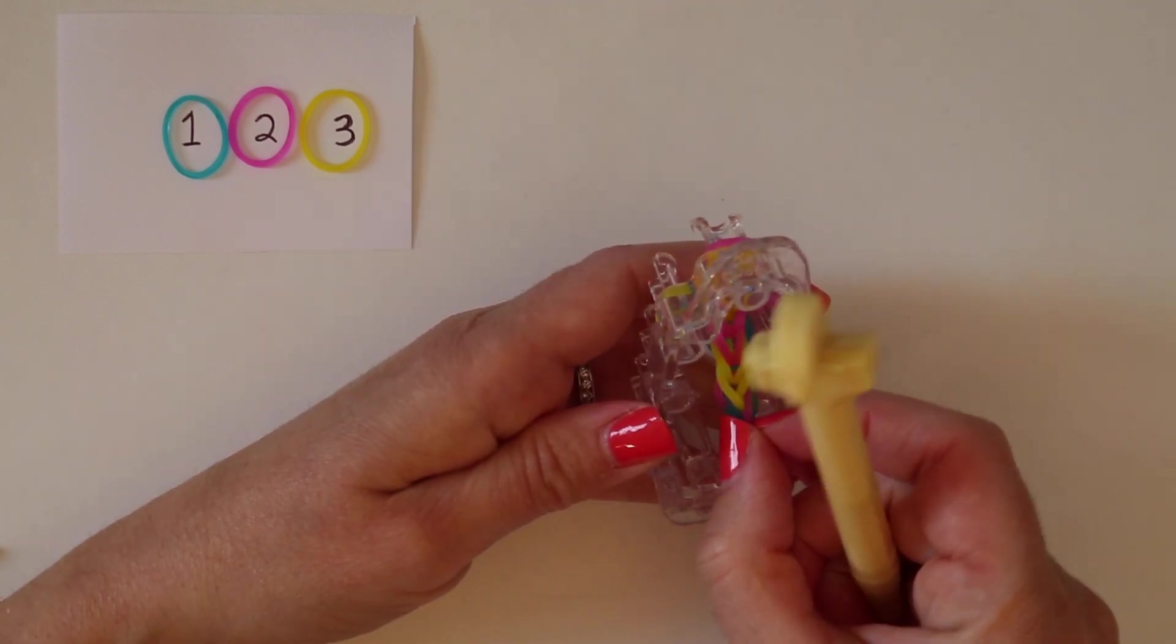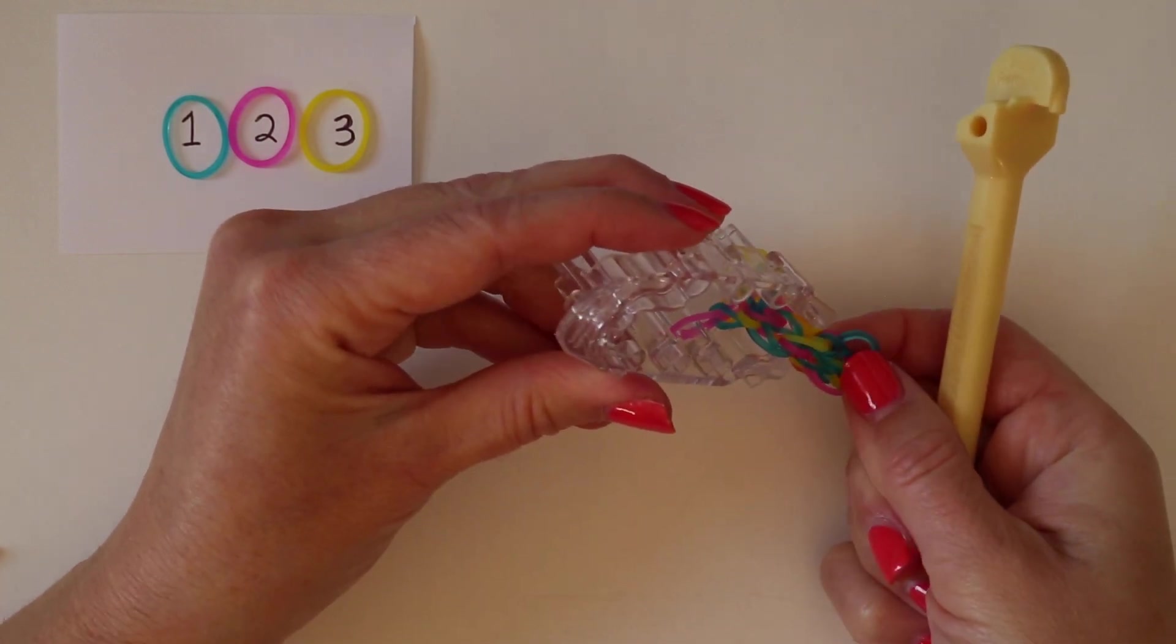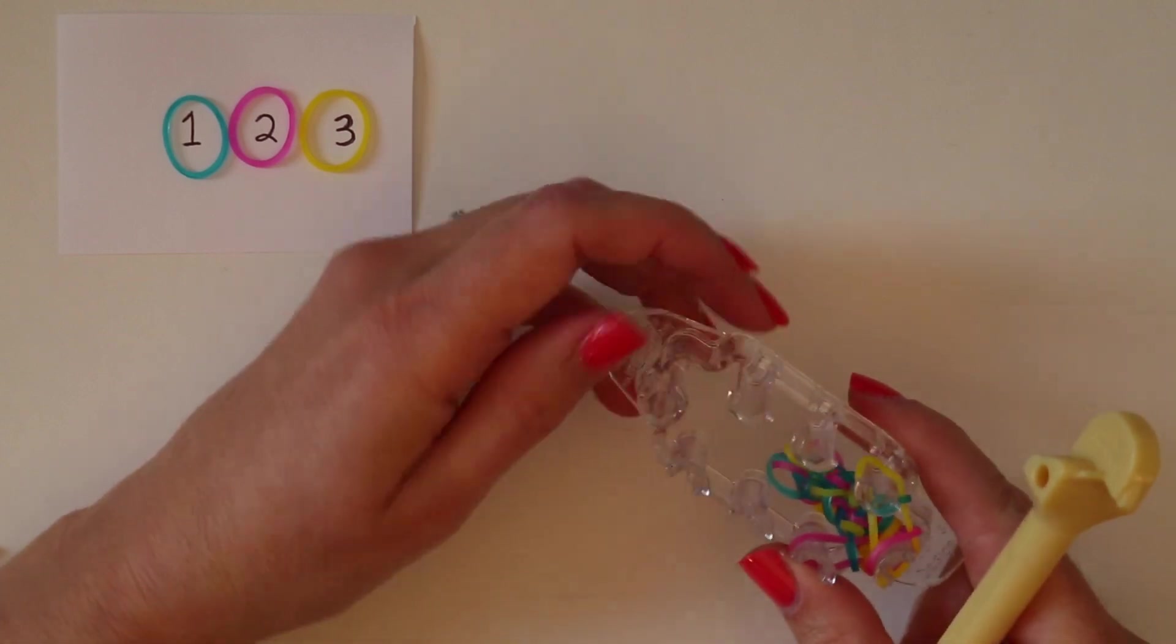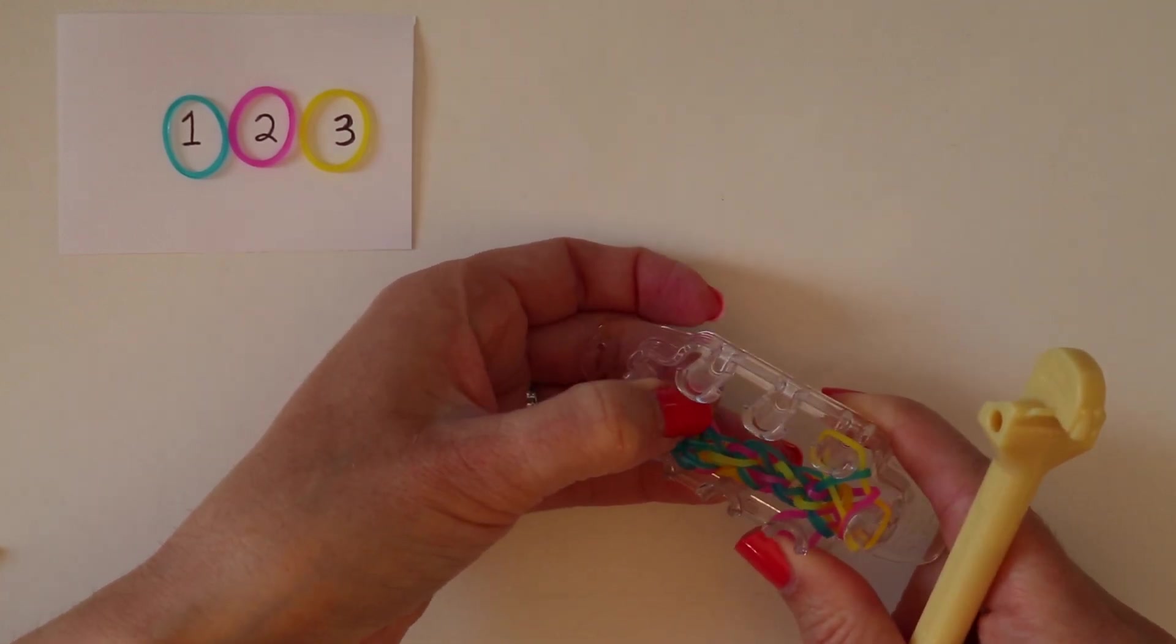One side it will look like a fishtail, and the other side is where you'll see the really great stormy sea pattern. And you just keep repeating that pattern until you have the length that you desire.